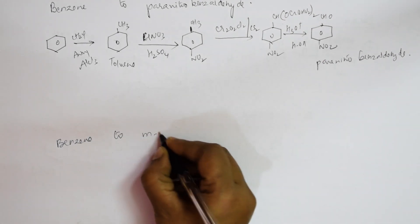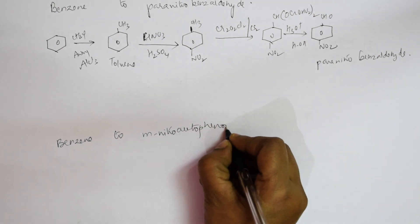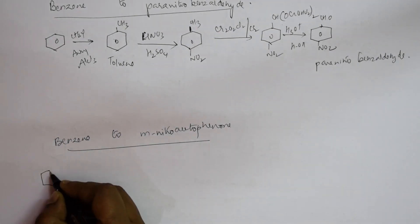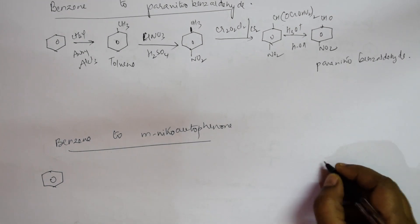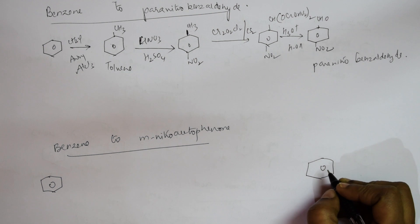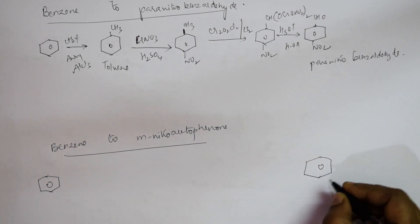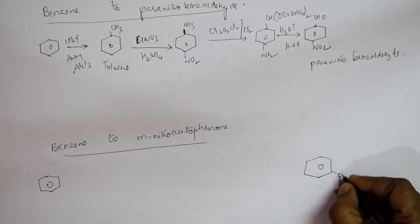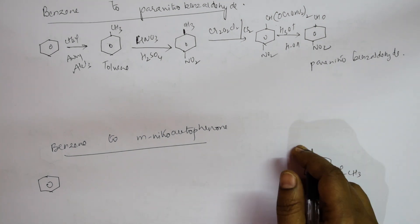Now the last conversion: benzene to meta-nitroacetophenone. Acetophenone has a COCH3 group on the benzene ring. With NO2 at the meta position, this is meta-nitroacetophenone.